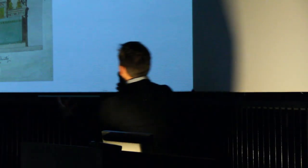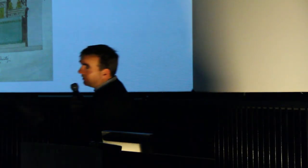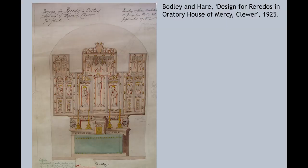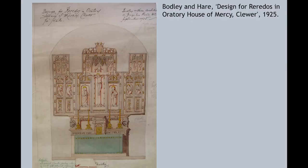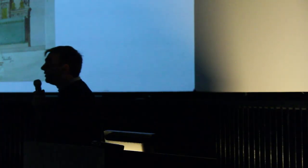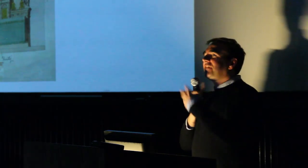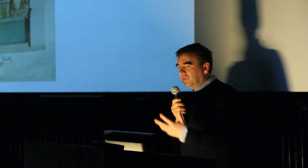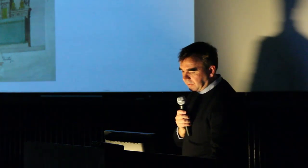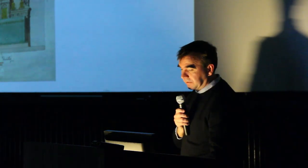Just to drive that home, here's a design for a big reredos by Bodley — GF Bodley, one of his later partnerships, Bodley and Hare. If I showed you that without the date, you might place it somewhere in the 1860s or 1870s. It's 1925. So one of the things I'm saying today is that a lot of this church art we think of as Victorian is very much alive around the time Duncan Grant is making his interesting work.